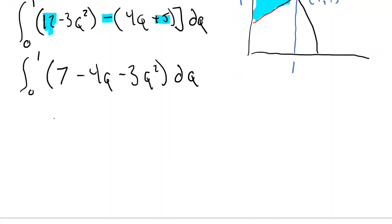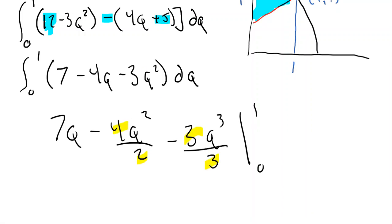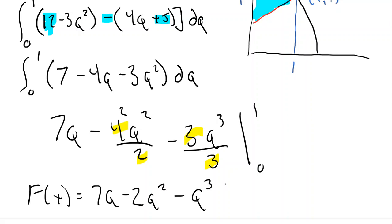And so we're going to integrate with respect to Q. So we have 7Q minus 4Q squared over 2 minus 3Q cubed over 3 integrated from 0 to 1. And of course, this cancels with that. That cancels with that. And we get a 2 here. So my antiderivative is 7Q minus 2Q squared minus Q cubed. And that is what we would put into Desmos.